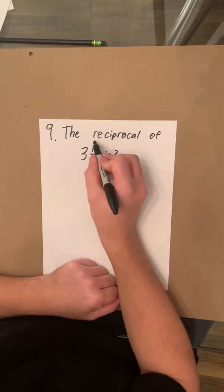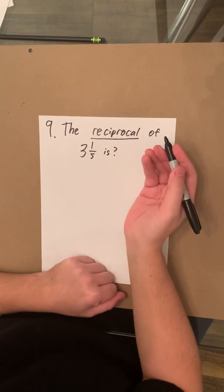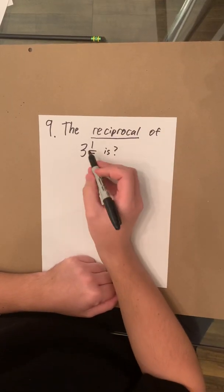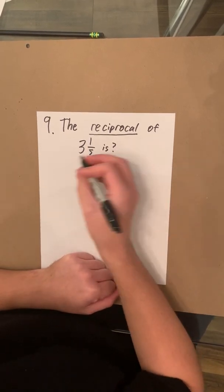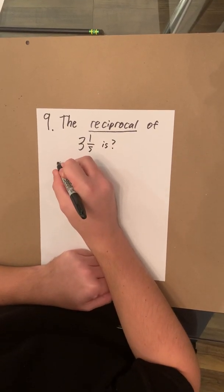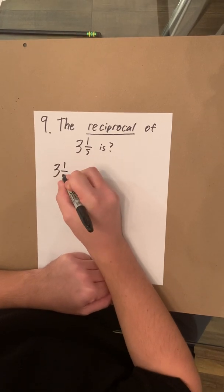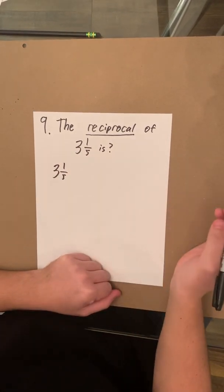Remember the reciprocal means a fraction but flipped upside down. But it'd be harder to flip a fraction while we have a whole number here. So the first thing we're going to want to do is to turn three and one-fifth into an improper fraction.